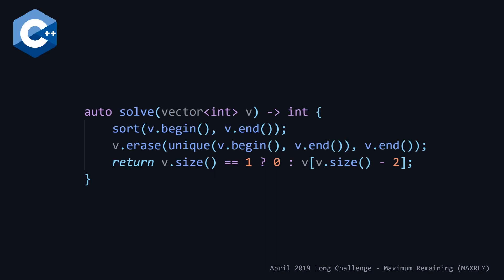In our C++ solution, the function takes a vector of integers and returns an integer using trailing return types, consistent with our Rust and Haskell solutions. On the first line we sort all integers in the vector, then call unique and wrap it in a call to the vector's erase member function to adjust the vector's size. Finally, a ternary operator returns zero if the size is one, otherwise returns the second last element by subtracting two from the size to get that index.